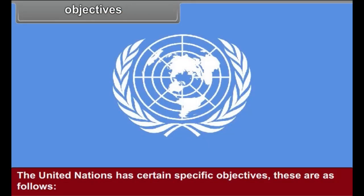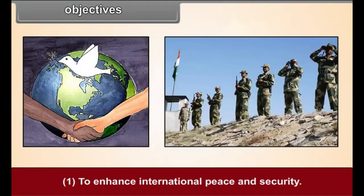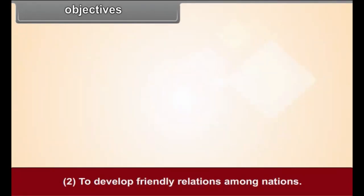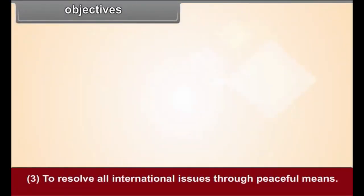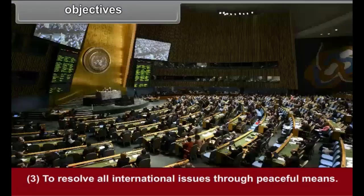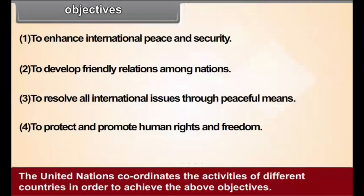The United Nations has certain specific objectives. These are as follows: 1. To enhance international peace and security. 2. To develop friendly relations among nations. 3. To resolve all international issues through peaceful means. 4. To protect and promote human rights and freedom. The United Nations coordinates the activities of different countries in order to achieve the above objectives.